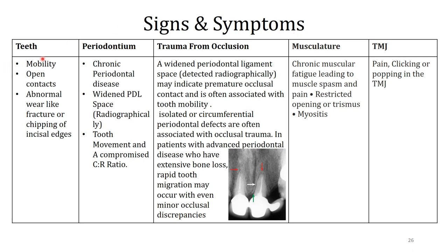There are certain signs and symptoms. In the teeth, there can be mobility, open contact, abnormal wear, fracture, and chipping off. In the periodontium, there can be chronic periodontal disease, widening of the PDL, tooth movement, and compromised crown-to-root ratios. TFO — trauma from occlusion — is an injury to the PDL from occlusal forces, leading to mobility and tenderness on percussion, with widening of the PDL visible on X-ray. On the musculature, there can be chronic fatigue, spasm, pain, restricted movement, and myositis. In the TMJ, there can be pain, clicking, and popping.